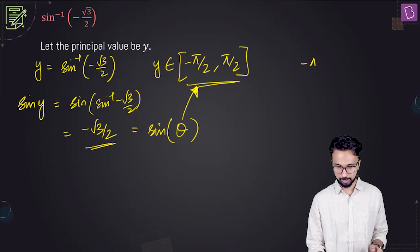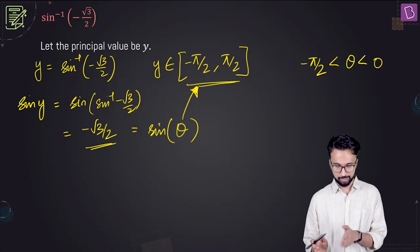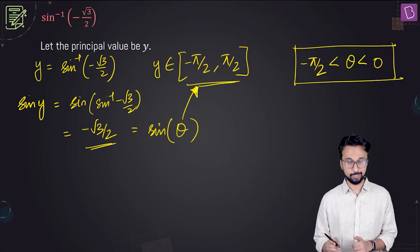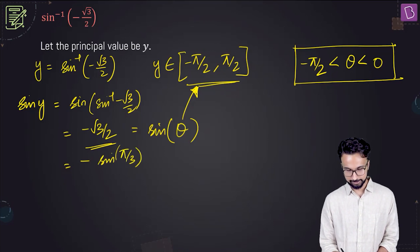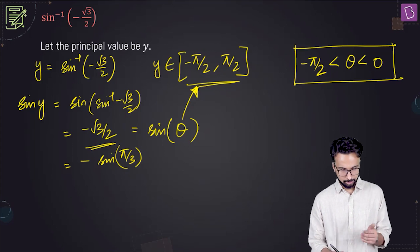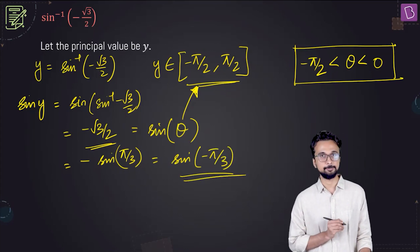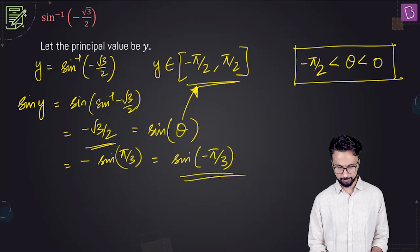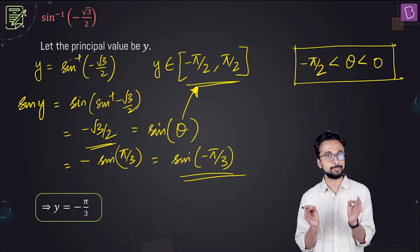We are looking in the fourth quadrant, between minus pi by 2 and 0. Since it's not equal to 1 or 0, theta is strictly between minus pi by 2 and 0. Now, minus root 3 by 2 can be written as minus sine pi by 3, since sine 60 degrees is root 3 by 2. This can be further written as sine of minus pi by 3. So sine y equals sine of minus pi by 3, giving us y equal to minus pi by 3.